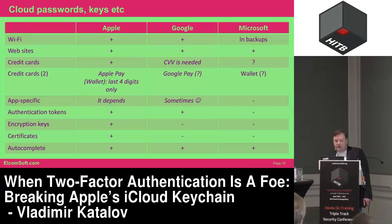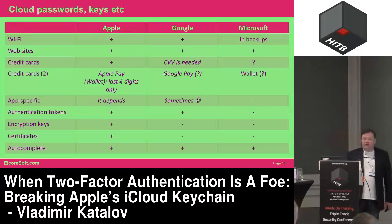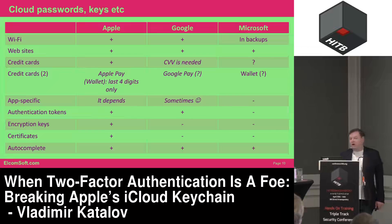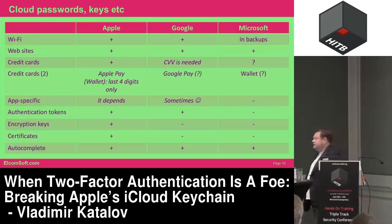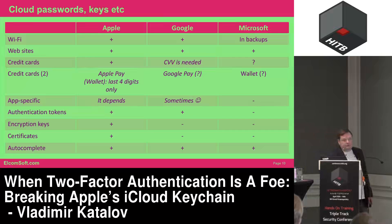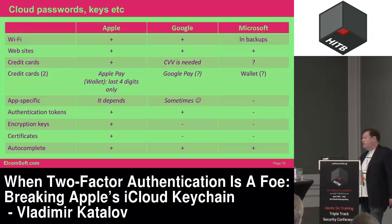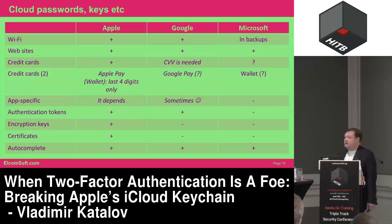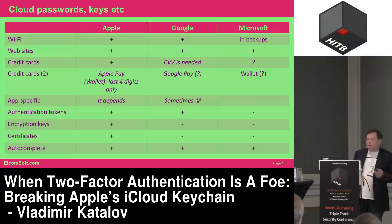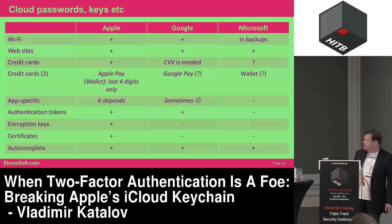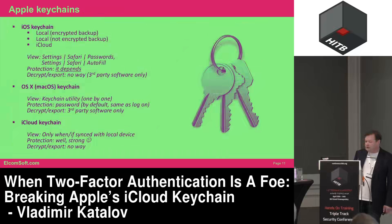In the cloud stores, there can also be encryption keys, certificates, and authentication tokens. For example, if you analyze how Facebook, Twitter, and other social networks save their credentials to cloud storage, you will find that passwords are not there and there is absolutely no way to get them. But on the device and in the cloud backup, there is an authentication token which can be used to access that account and download or view everything. There are also autocomplete texts that may contain passwords and other critical information.